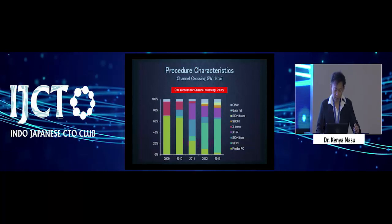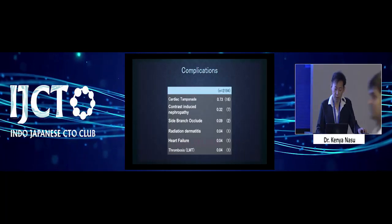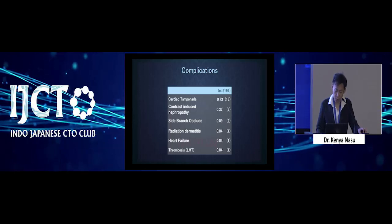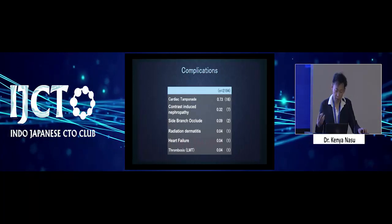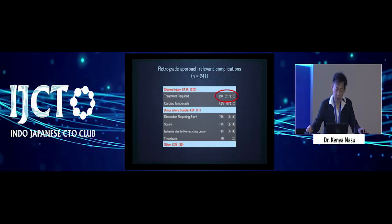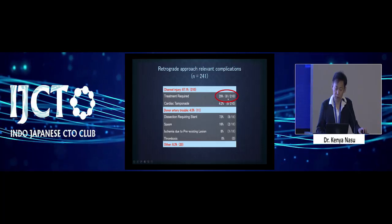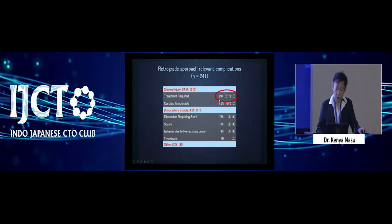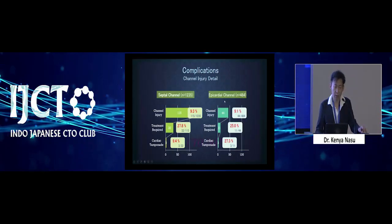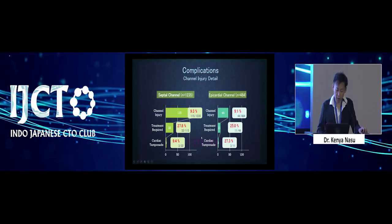So important data is our data — the Japanese expert registry. In these two years, we have 0.7% cardiac tamponade. Almost all cases of this complication come from channel injury. We met channel injury in 210 cases, but 61 required a hemostasis procedure — meaning 30% of channel injury cases needed some treatment to achieve hemostasis. However, in the septal channel and the epicardial channel, the incidence of channel injury is almost similar. But we should keep in mind that once there is a very big channel perforation inside the epicardial channel, the situation is sometimes very terrible.